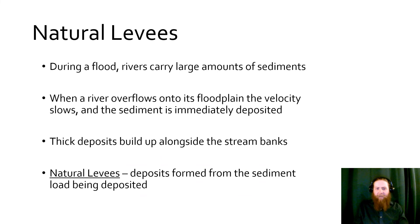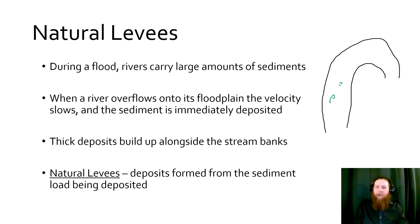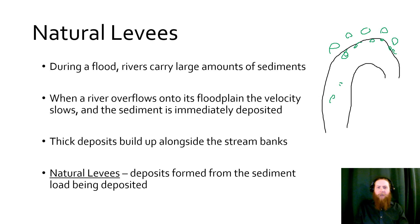As water goes around meanders, it carries sediment. As this sediment hits the edges, it gets deposited in what we call natural levees — especially when water overflows its banks and sediment is deposited as the water leaves its channel and slows down. We get these very thick deposits built up, forming natural levees that help keep the water inside the channel.